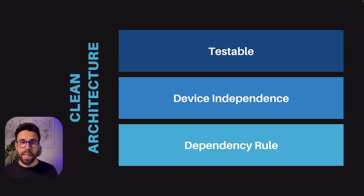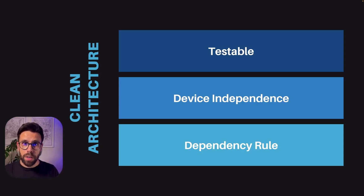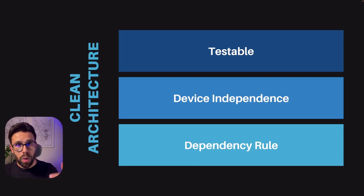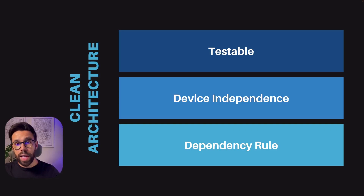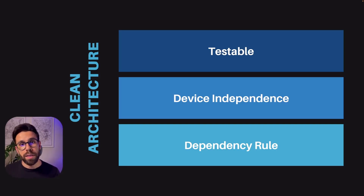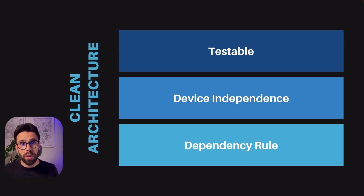On the other hand, with Clean Architecture, the main goals consist of having a testable architecture, achieved by avoiding dependence on a given technology — database, API, framework, whatever. You can do that by enforcing the most important rule: the dependency rule. Every single dependency should point inwards.